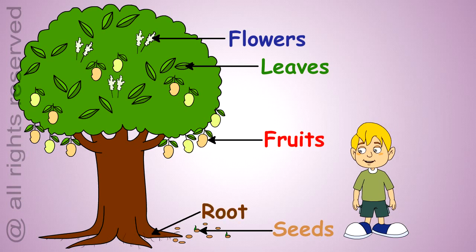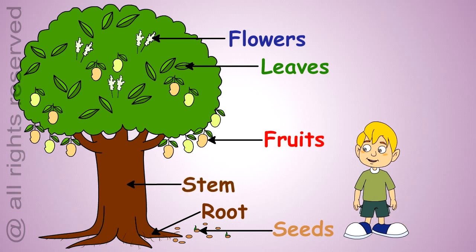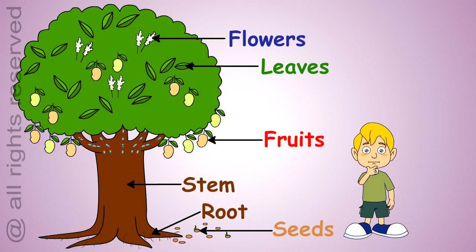Roots, which absorb water and nutrients from the soil. And stem, which supports the plant and transfers the water and nutrients from root to various parts of the plant.